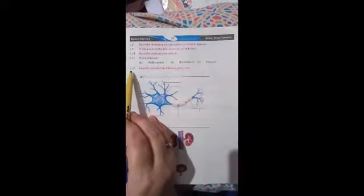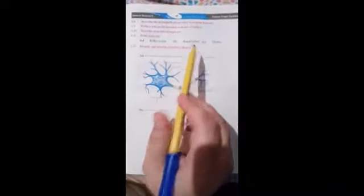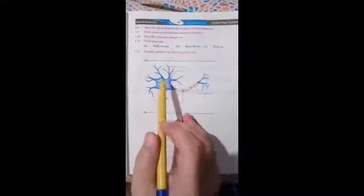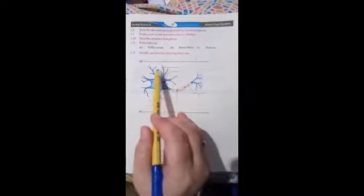Question number 1.12: identify and label the following diagrams. A. This is the diagram of a neuron or nerve cell and we have to label it.